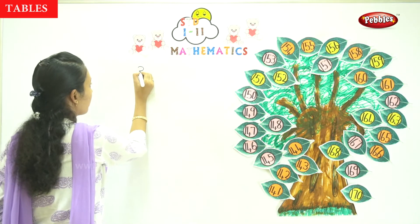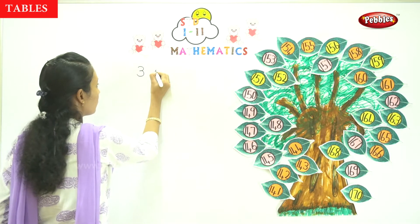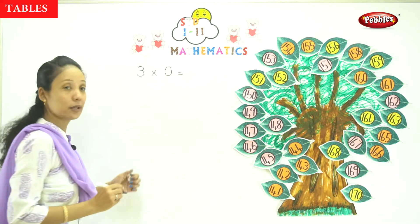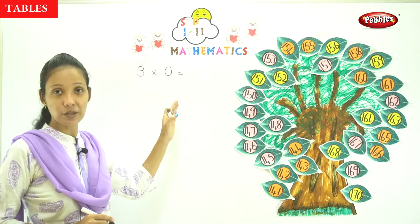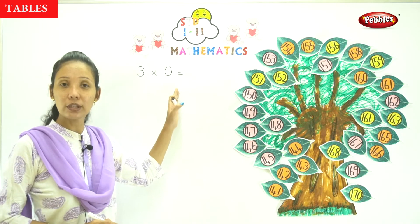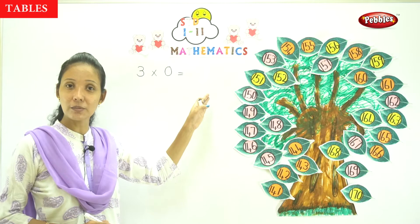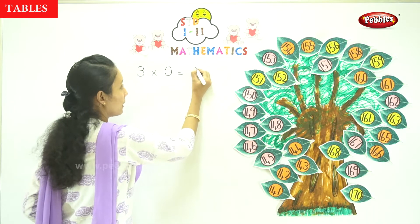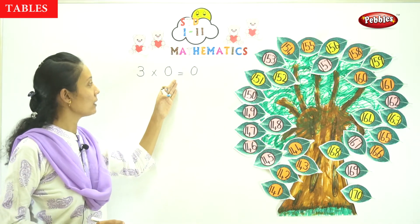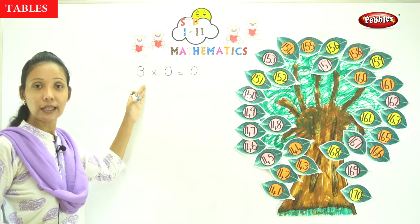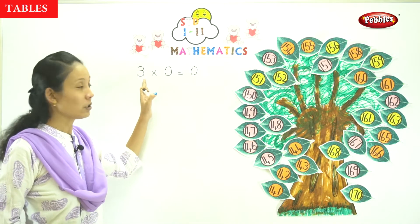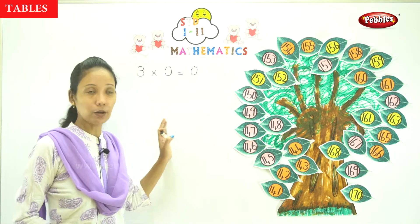That is 3 into 0 — what is it? In the first question, what do you do? Whatever number is multiplied into 0, what will the answer be? Yes, it will be 0. 3 into 0 is equal to 0. Whatever number — what number is it? It will be 0. It is correct.